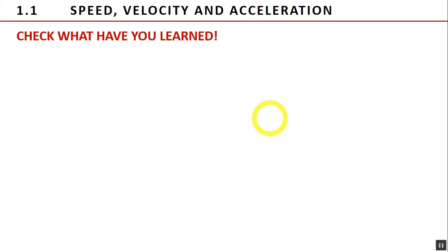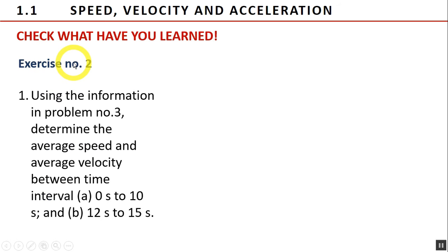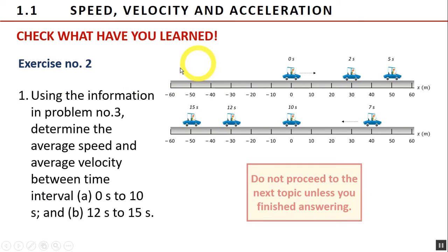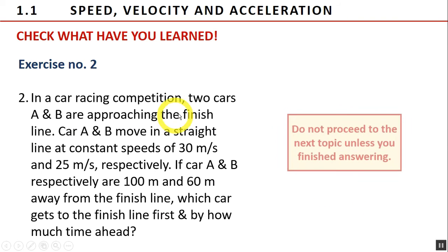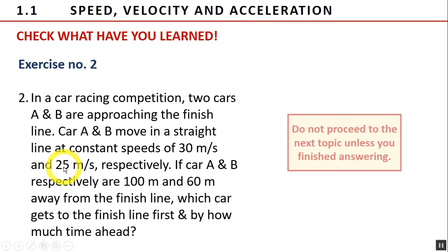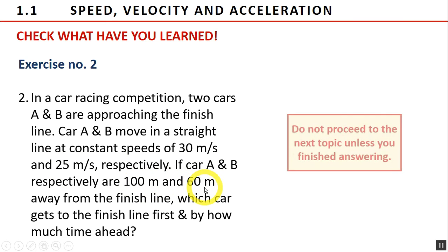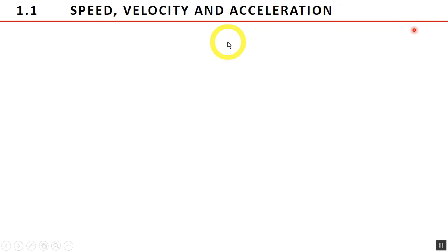Now it's your turn. Let us see what you have learned about speed and velocity. Don't forget to follow the general instructions explained in Exercise 1. Exercise 2 is composed of two problems. Problem 1: referring to the figure, determine the average speed and average velocity between time intervals 0 to 10 seconds and 12 to 15 seconds. Problem 2: in a car racing competition, two cars A and B are approaching the finish line. Car A moves at a constant speed of 30 meters per second and Car B at 25 meters per second. Car A is 100 meters from the finish line and Car B is 60 meters away. Which car gets to the finish line first and by how much time ahead? Congratulations for answering Exercise 2.